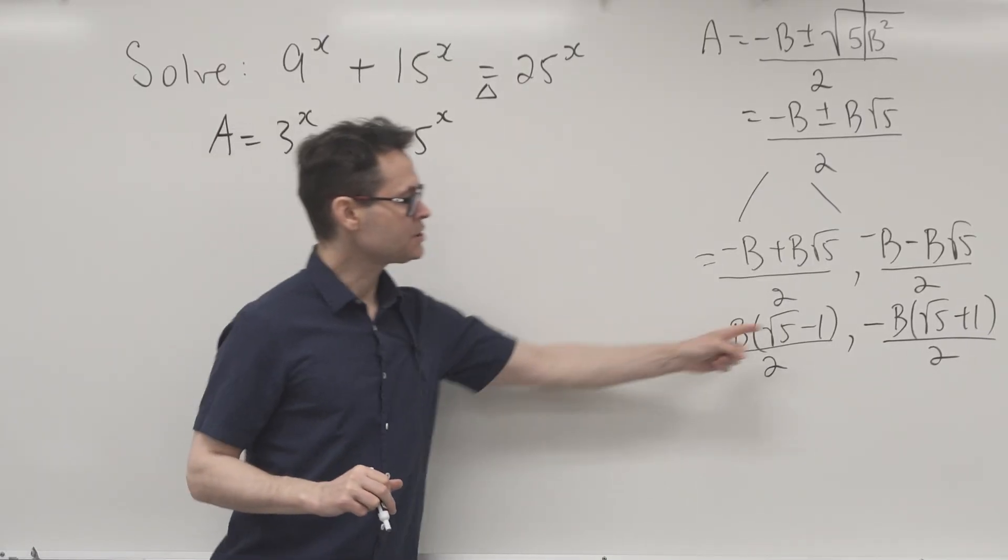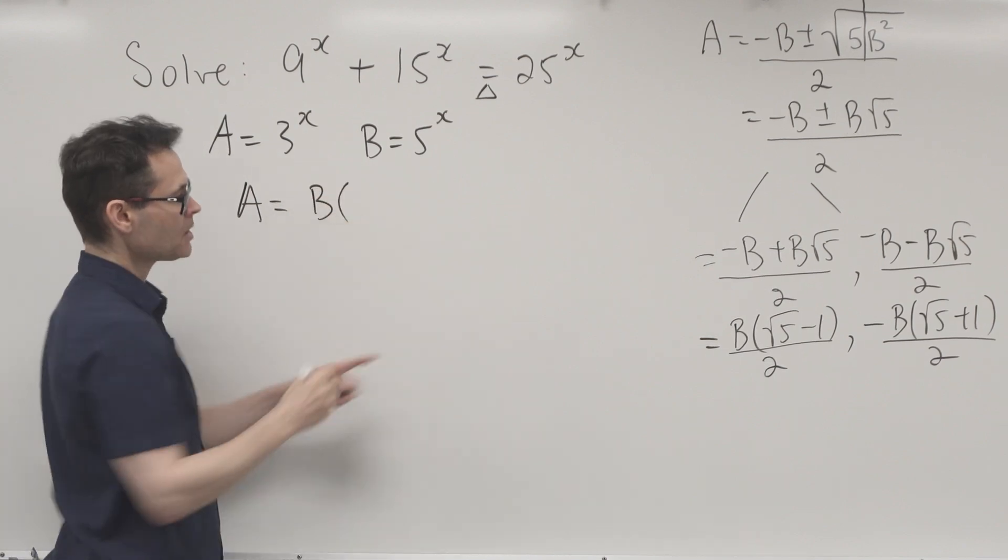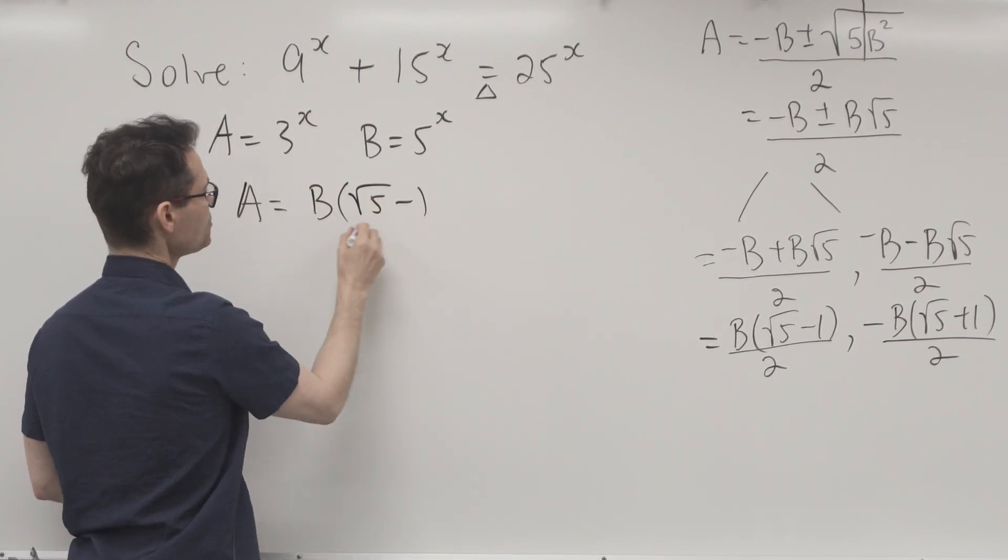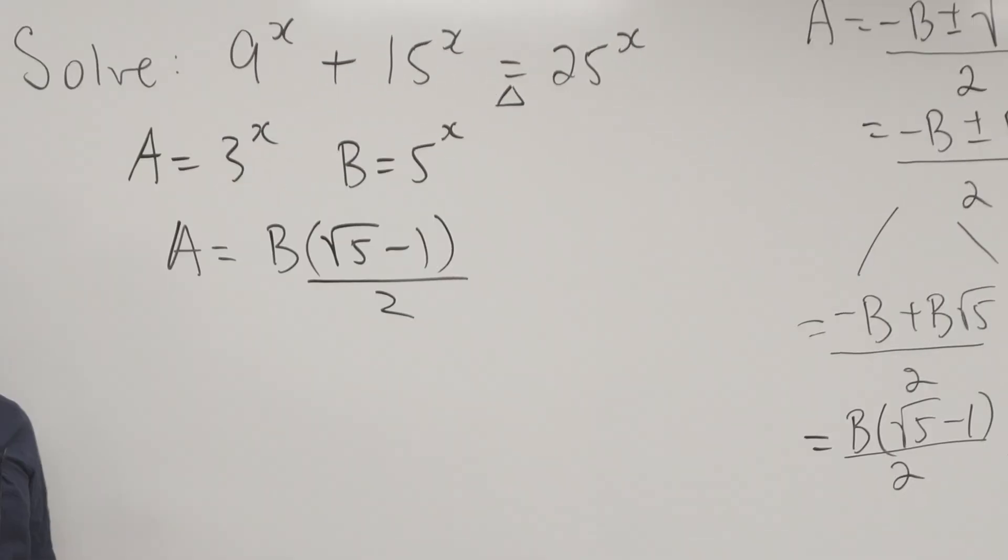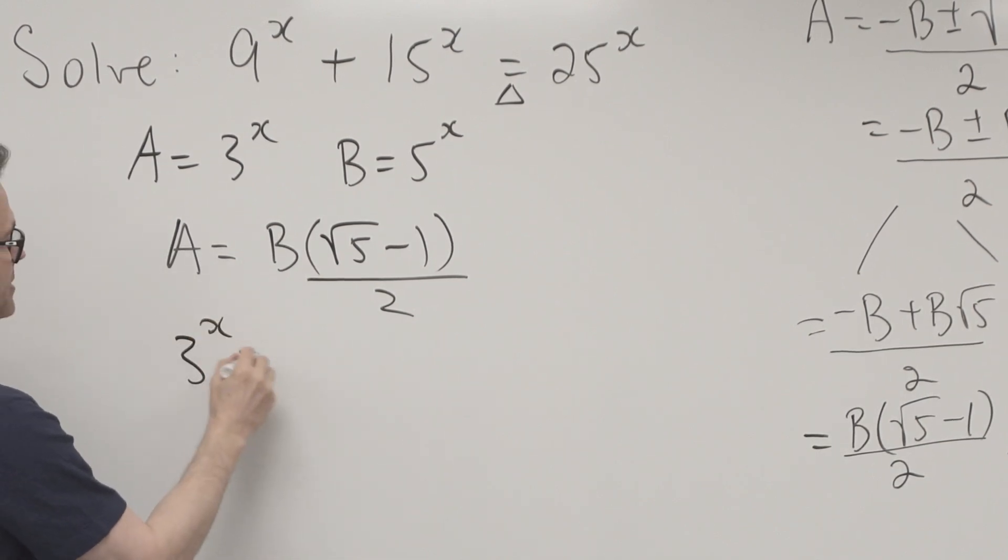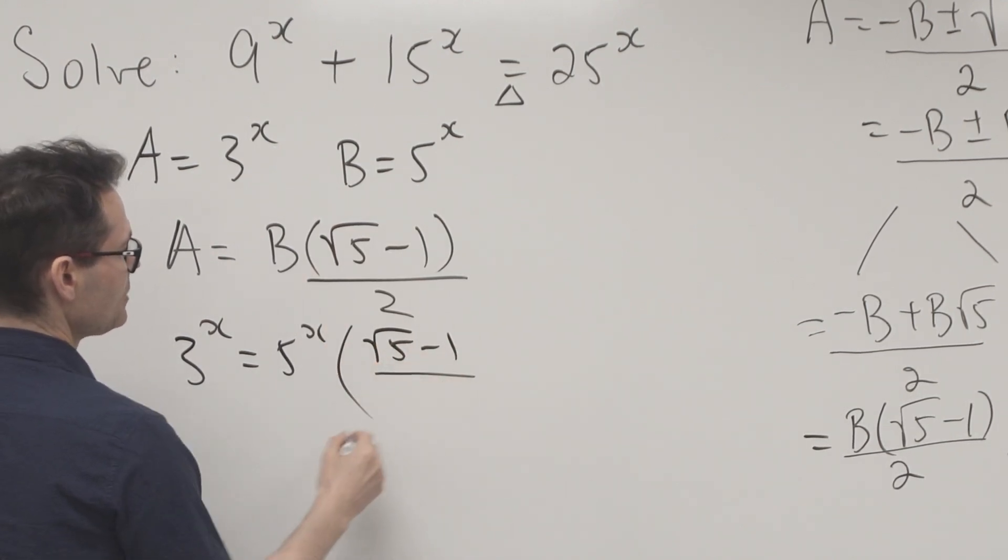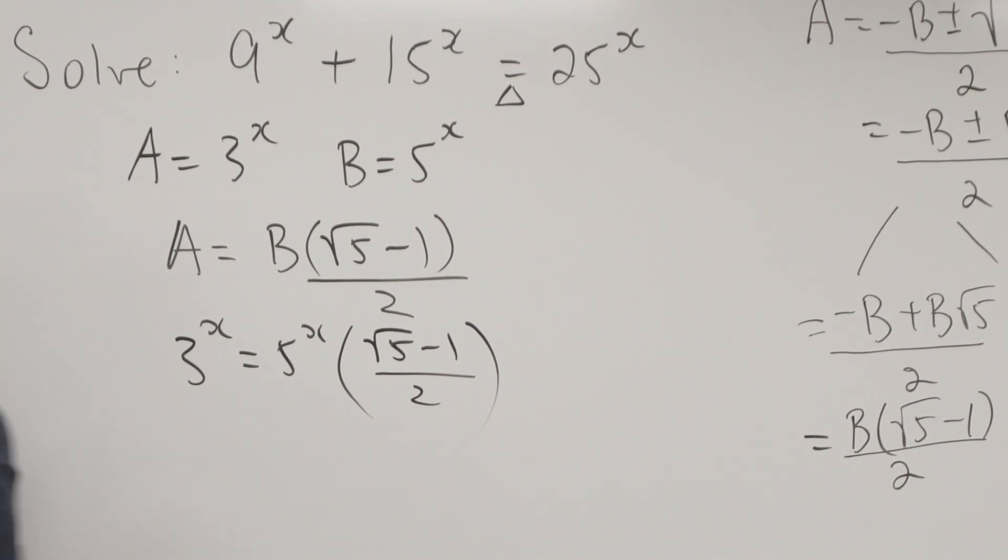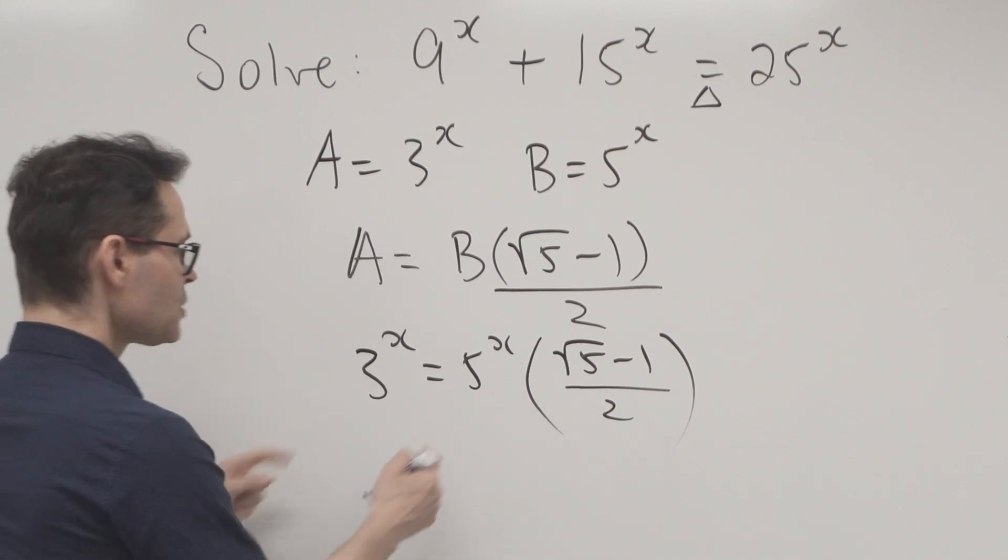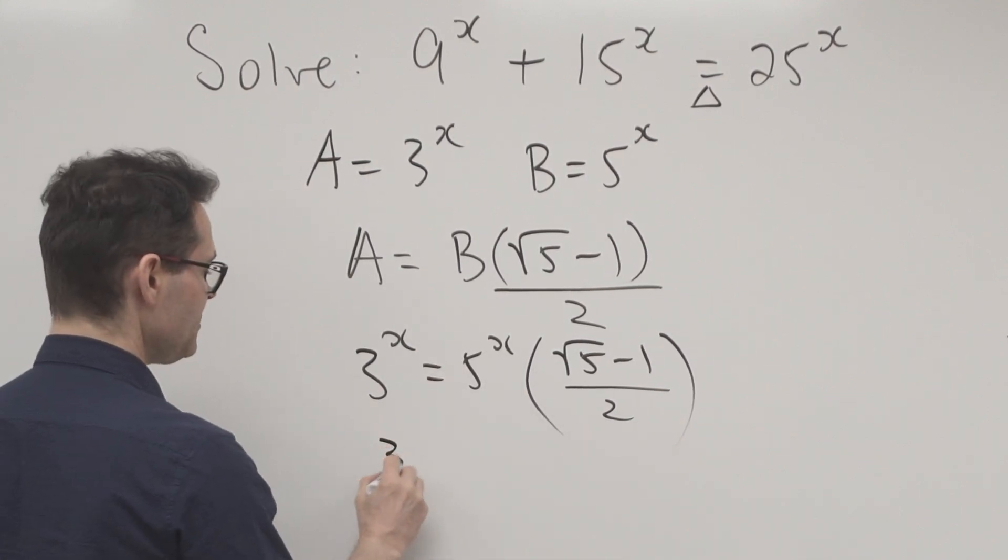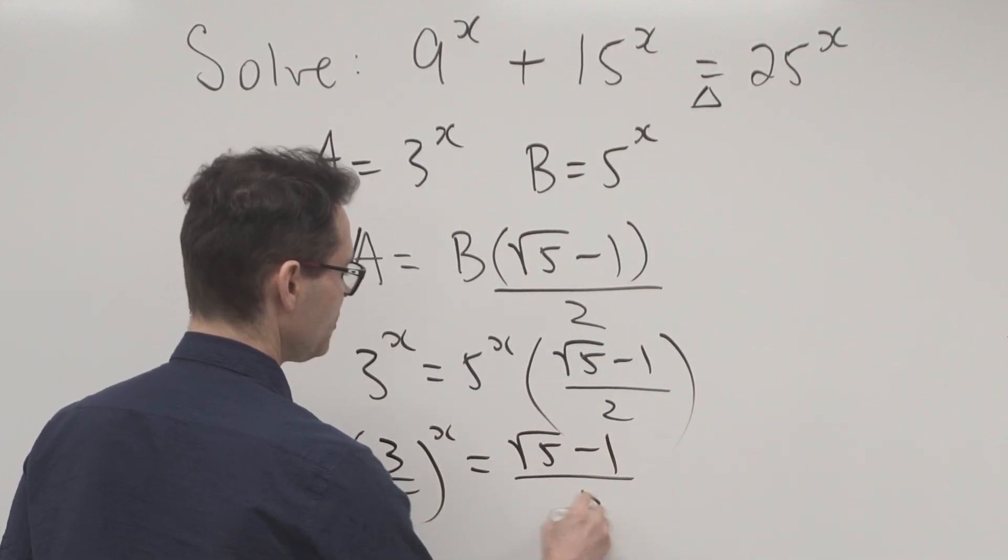For the first case: A = B(√5 - 1) / 2. Substituting back: 3^x = 5^x(√5 - 1) / 2. Dividing both sides by 5^x gives (3/5)^x = (√5 - 1) / 2.